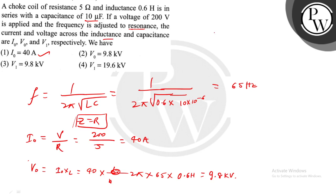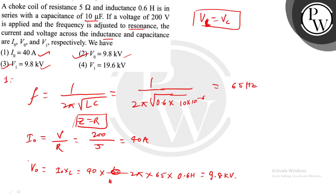Now at resonance, V₀ equals V_C, meaning VL equals VC. So the potential across inductance equals the potential across capacitance. Therefore 9.8 kilovolt is the voltage across inductance and also 9.8 kilovolt across capacitance. So the answer is options 1, 2, and 3.